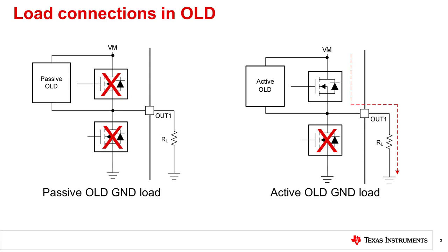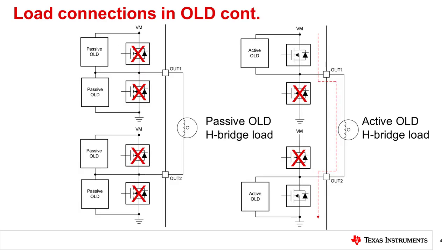In both VM and ground connection types, unidirectional motors, solenoids, LEDs, and relay loads are connected between an output — for example, OUT1 — and either VM or ground. The third connection type is a load connected in an H-bridge. In this configuration, the load is connected between two outputs, for example OUT1 and OUT2, and is used for bidirectional control of loads.